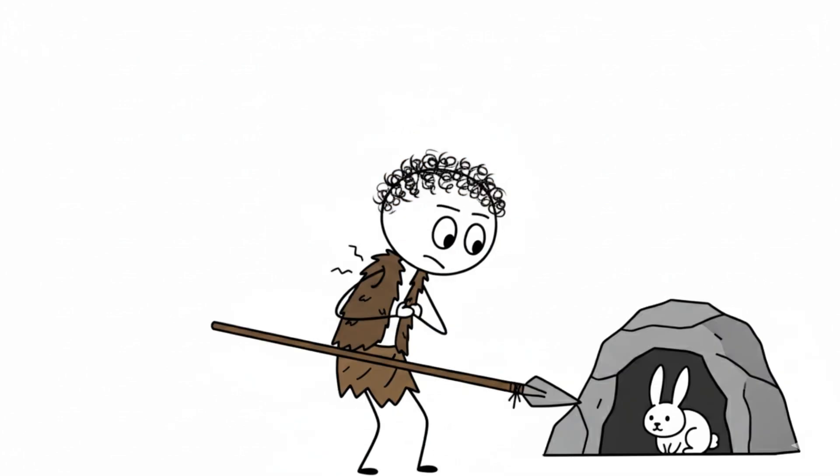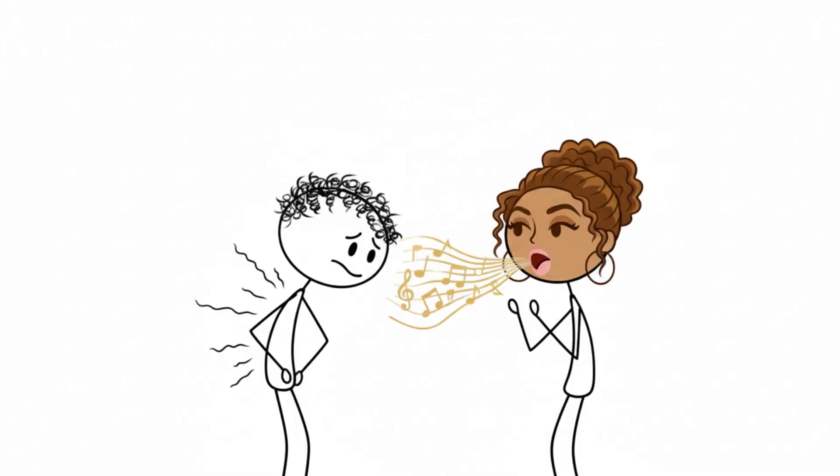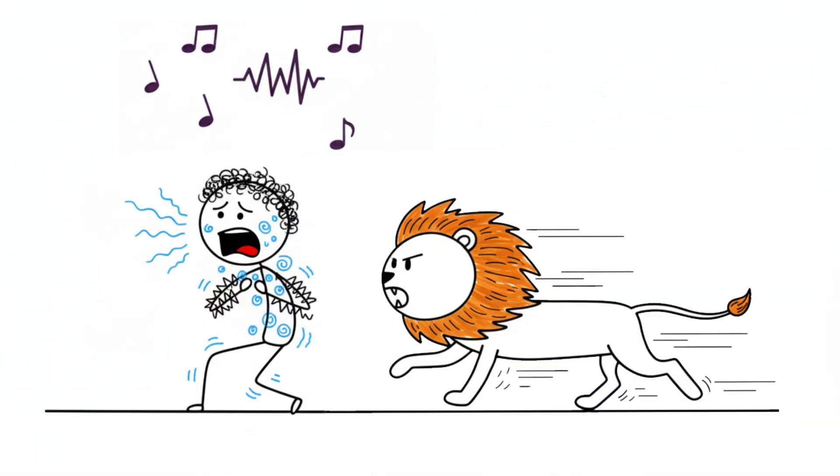But here's the twist: that same physiological rush originally evolved for survival, triggered by things like spotting prey, finding shelter, or, you know, not dying. So when you feel shivers during a chorus, your brain's reward circuits are reacting as if Beyoncé just saved your life. Your body can't tell the difference between beautiful harmony and 'we just outran a lion.' So yeah, that song didn't just move you, it triggered your ancient survival wiring.